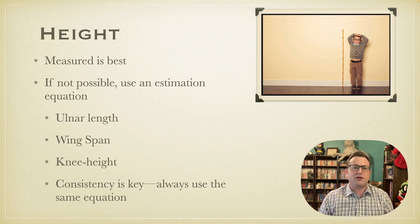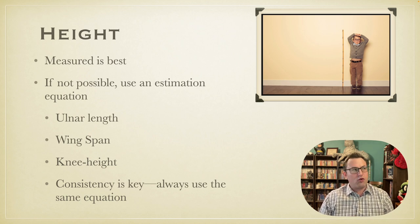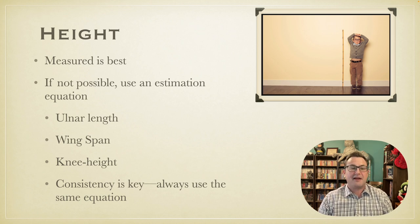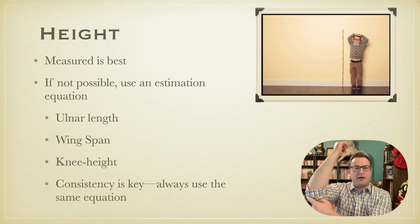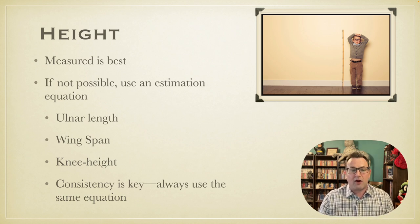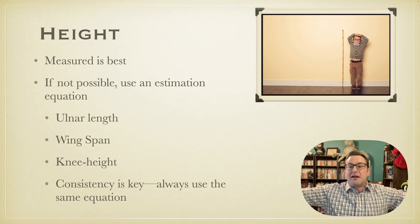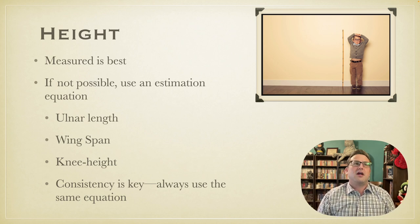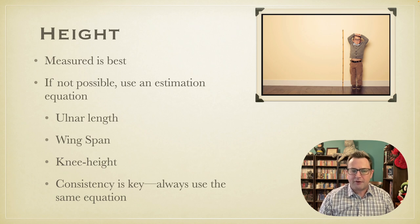So what we often have to use are height estimation equations, and there are a lot of them. My favorite is the ulnar length — from the elbow to the wrist — which you then take to a table to determine roughly how tall they are. There's also the wingspan, from fingertip to fingertip with arms spread out.